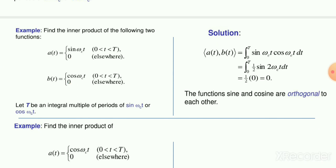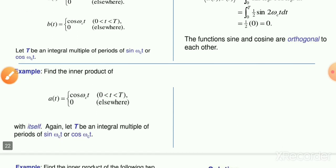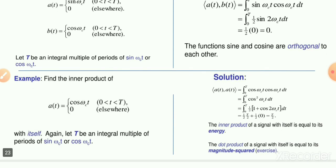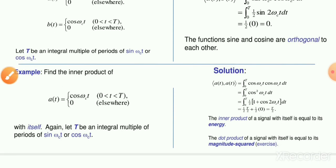When two vectors are perpendicular their dot product is 0; when two signals are orthogonal their inner product is 0. This generalizes the idea: just as the dot product of a vector with itself gives its magnitude squared, if you find the inner product of a single signal a(t) = cos(ωc·t) with itself, the result equals T/2 — which is the energy of the signal. So the inner product of a signal with itself equals its energy.